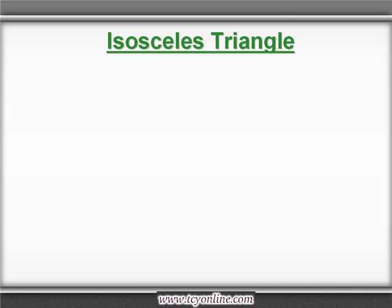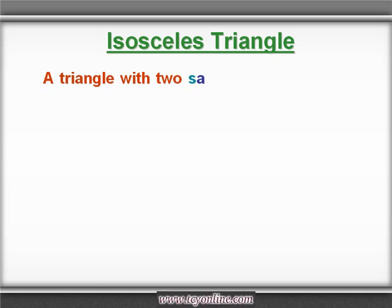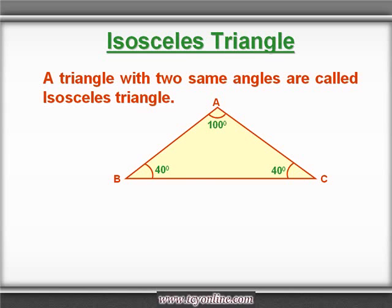Let's learn about the second type of triangle: the isosceles triangle. In an isosceles triangle, the measure of two angles is the same, and also the measure of two sides is the same. See in the picture — in triangle ABC, the measure of angle B is 40 degrees and the measure of angle C is also 40 degrees, while the measure of angle A is 100 degrees. Since angle B and angle C are the same, triangle ABC is an isosceles triangle.